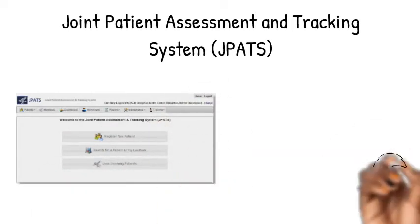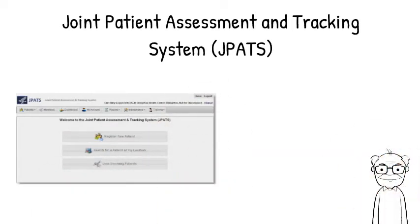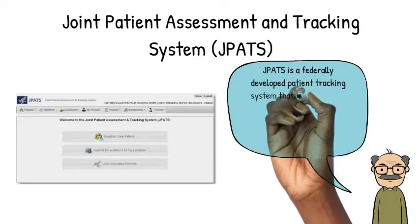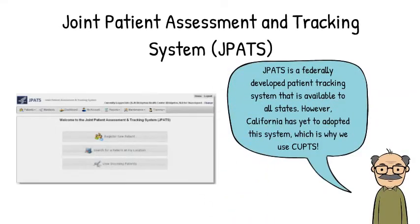The Joint Patient Assessment and Tracking System (JPATS) is the federal government's patient tracking system, part of the NDMS. It is used to track patients from state to state across the country when the system is activated. Providing our unique CUPS number ensures patients entering their system are properly tracked.